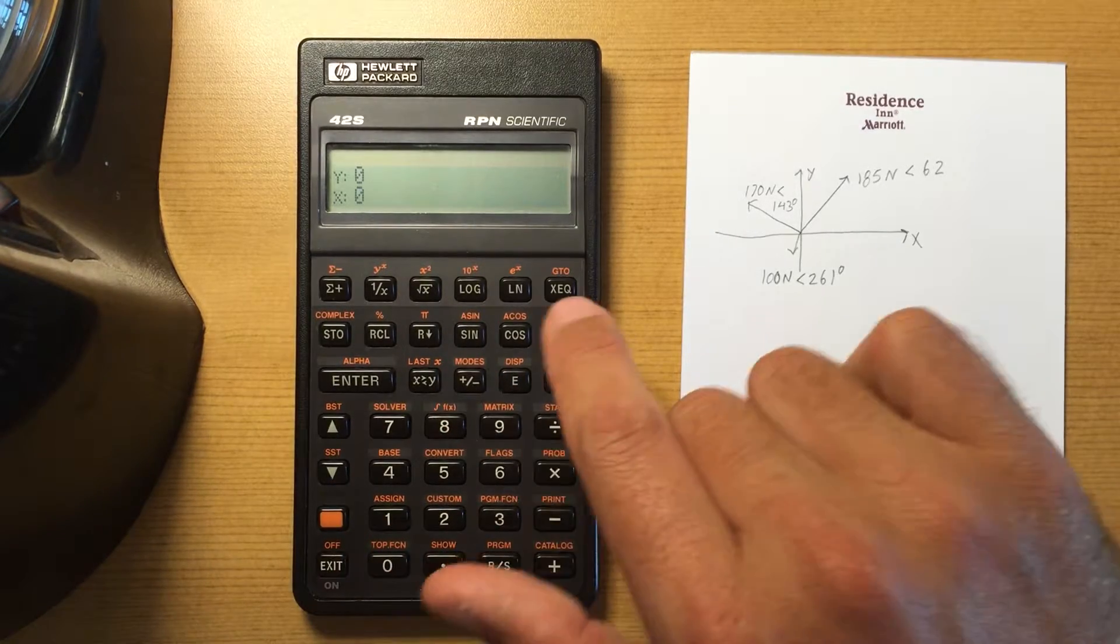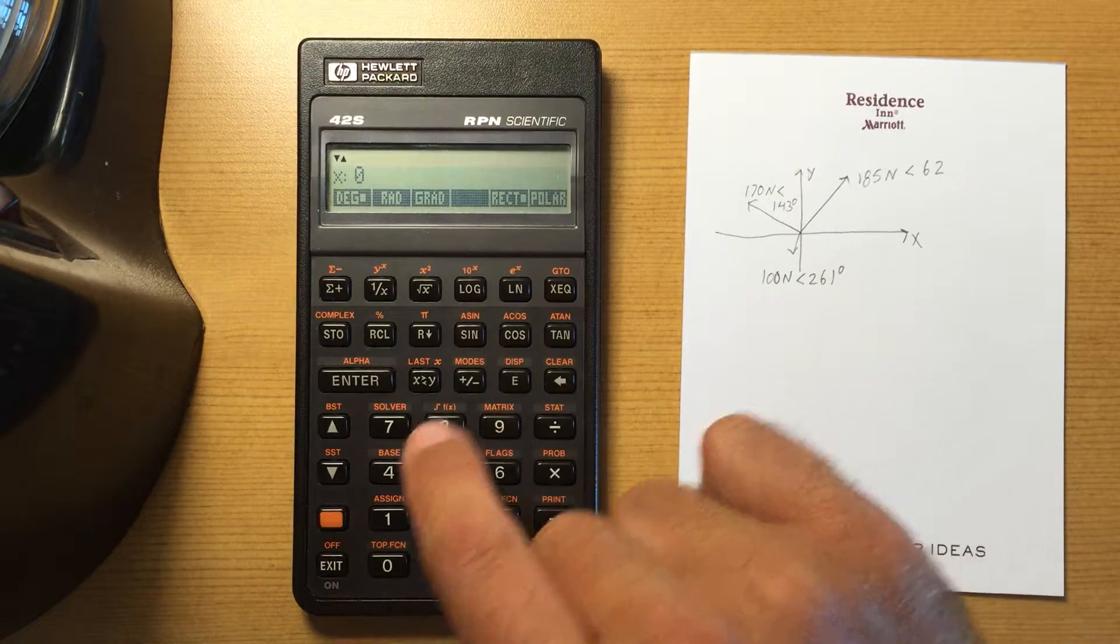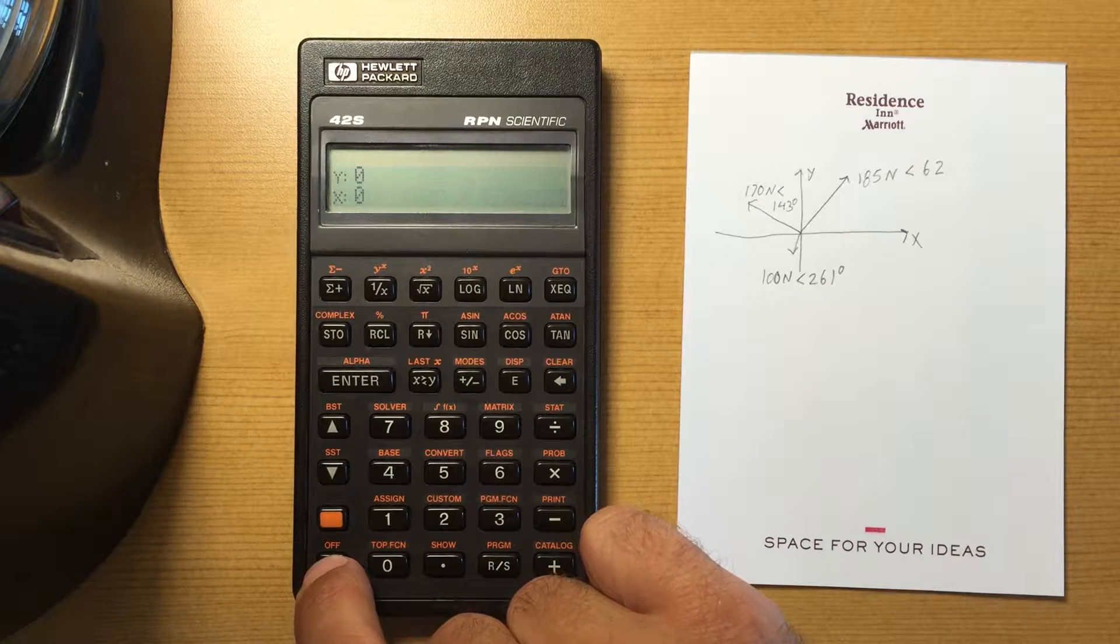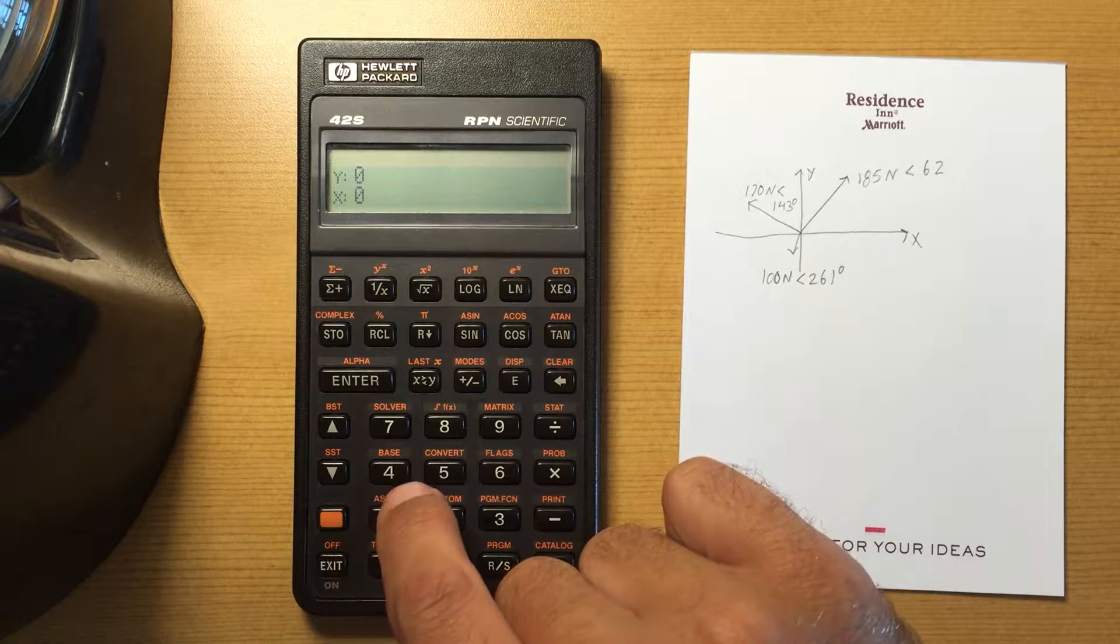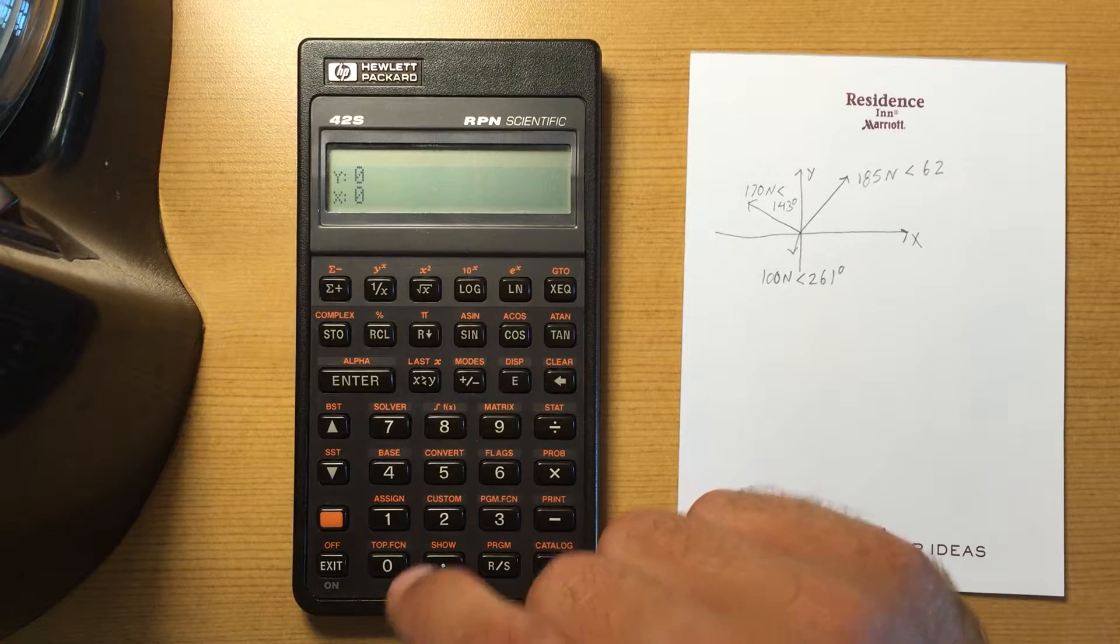So right now I am in rectangular mode. I went to modes, I'm in rectangular, and if I want to enter in a complex number, I would enter in the y portion, that would be the imaginary part first.